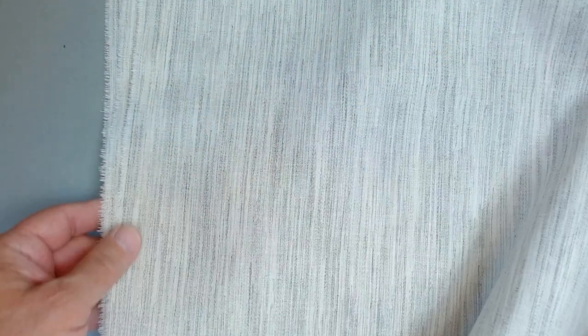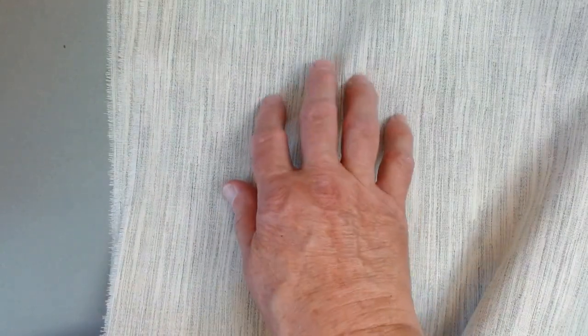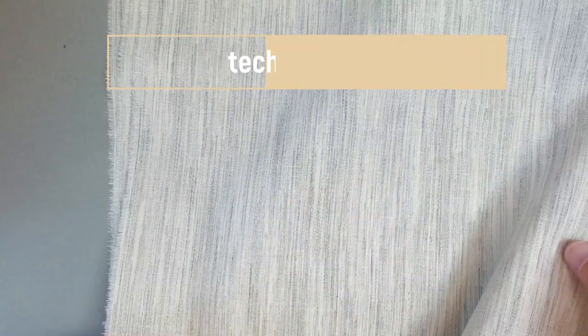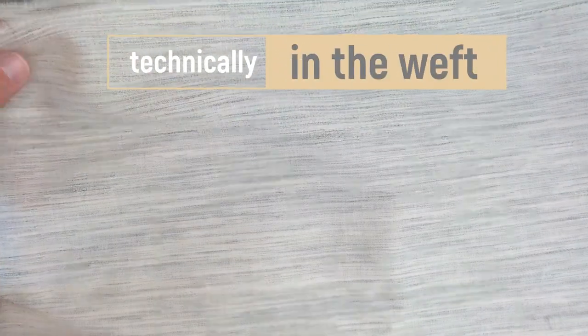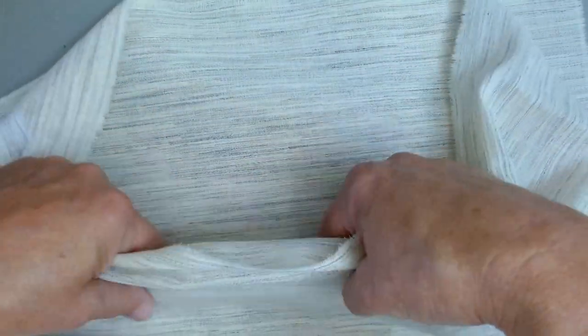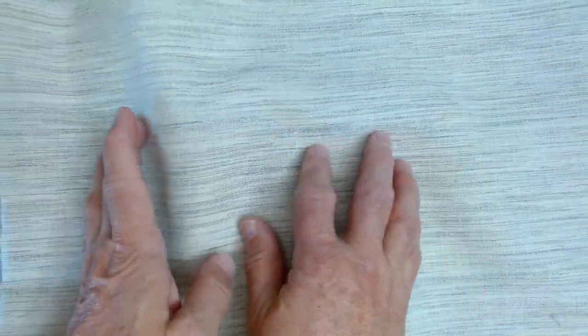So hair canvas. What exactly is it? It is this stuff right here. It's also called hymo. It's a fabric that's woven with animal hair in the cross grain. The lighter weight ones are made, I believe, with goat hair. You will find that this fabric is very flexible along the straight of the grain. But cross grain, the animal hairs make this fabric impossible to crease.